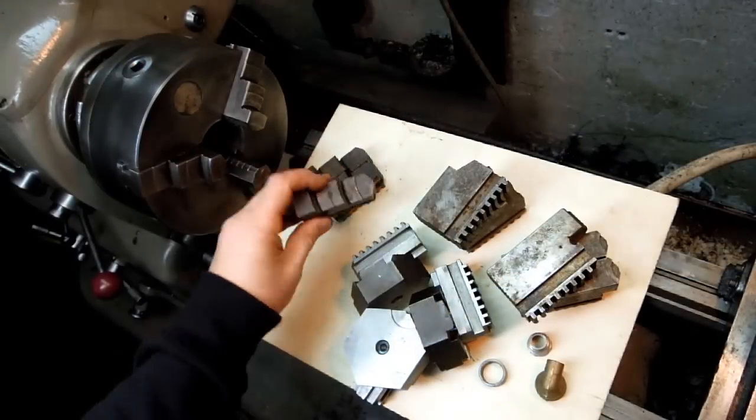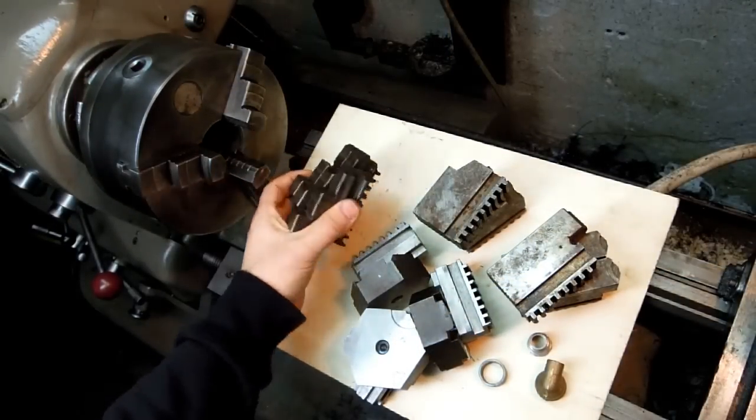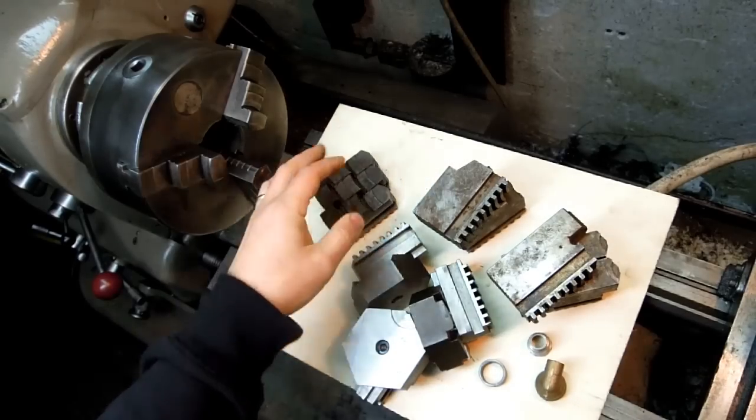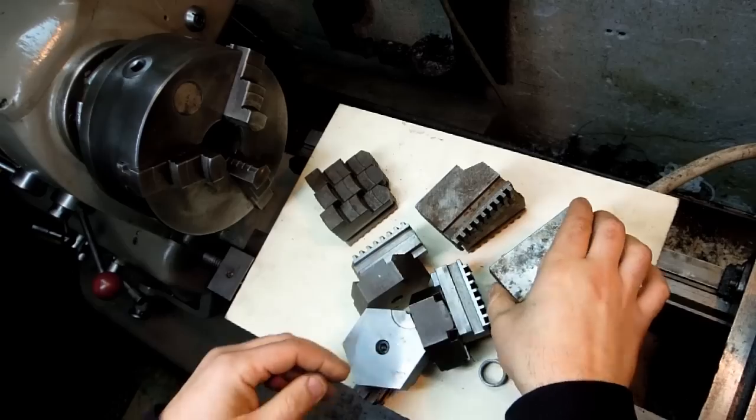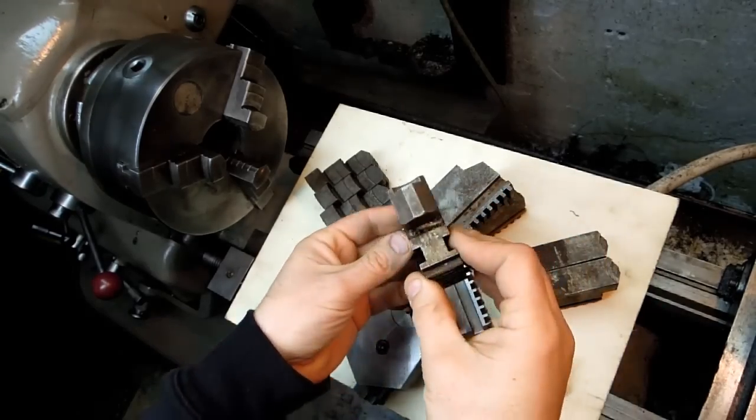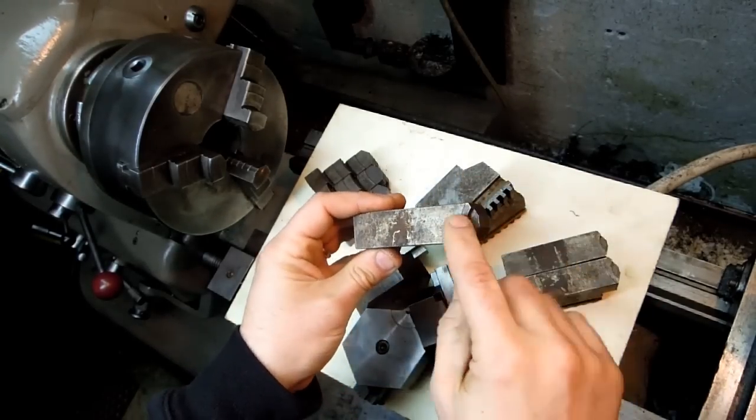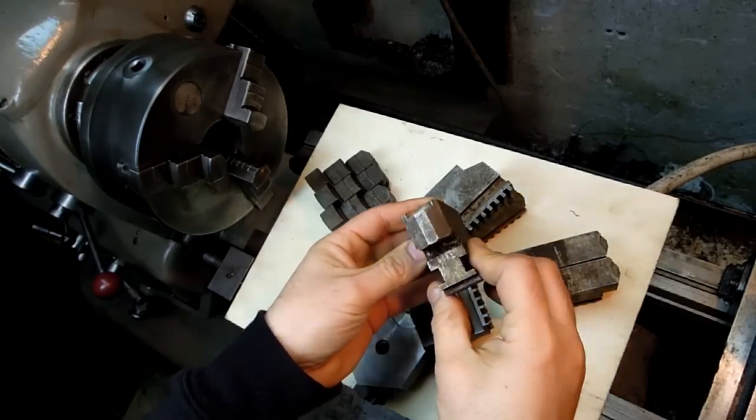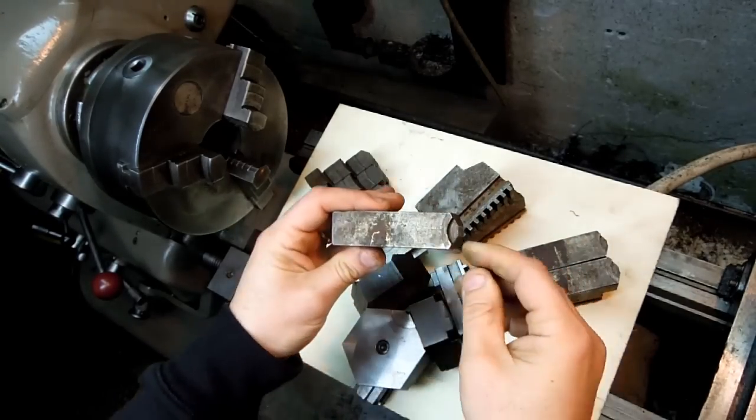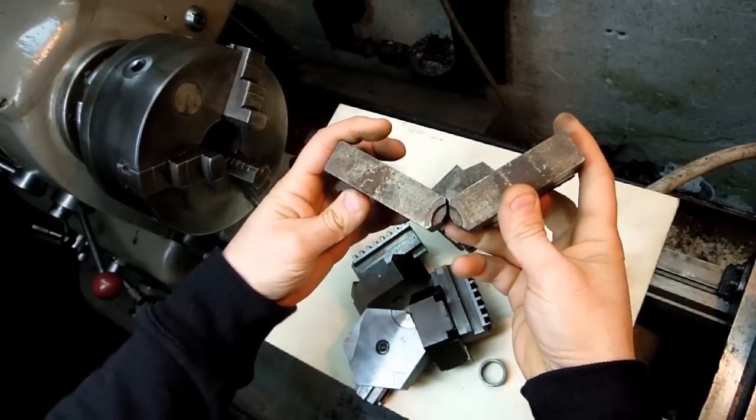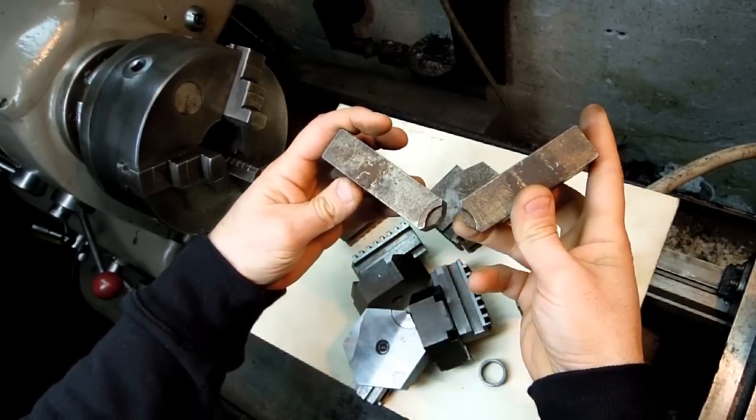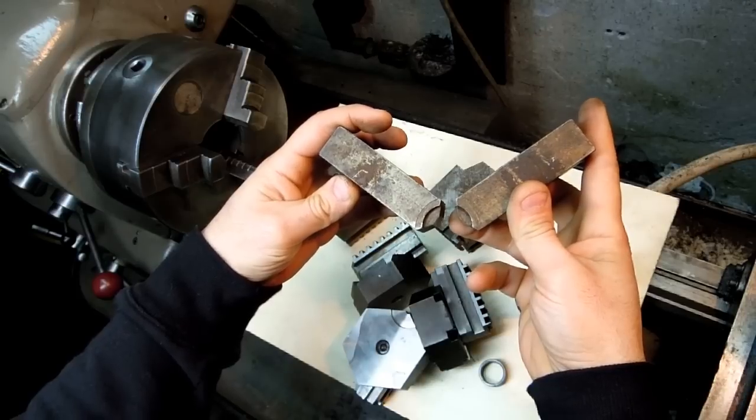So in addition to the internal and the external set of jaws that I got with this chuck, I also received three sets of soft jaws. So the soft jaws start life out looking something like this. These have been formed, these things still have a lot of life left in them. You can see the previous owner cut in a little round. I guess they were holding a little part, maybe about an inch and a half in diameter.